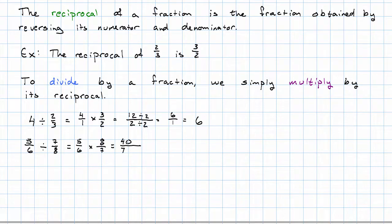So we'll have five times eight is 40. Six times seven is 42. We see we want to divide the numerator and denominator each by two. And we'll have 20 21sts.